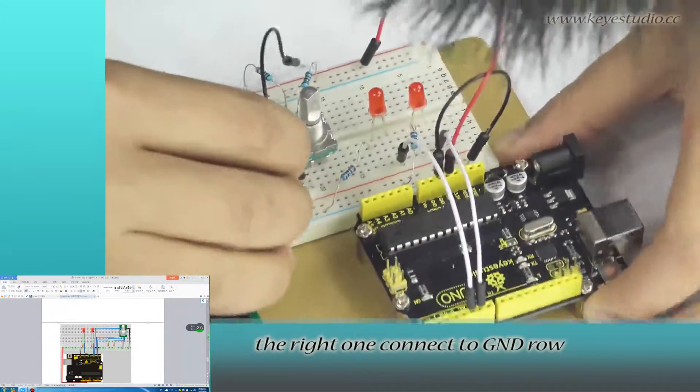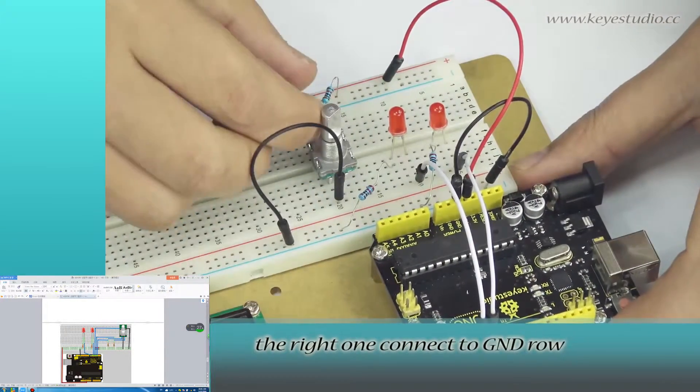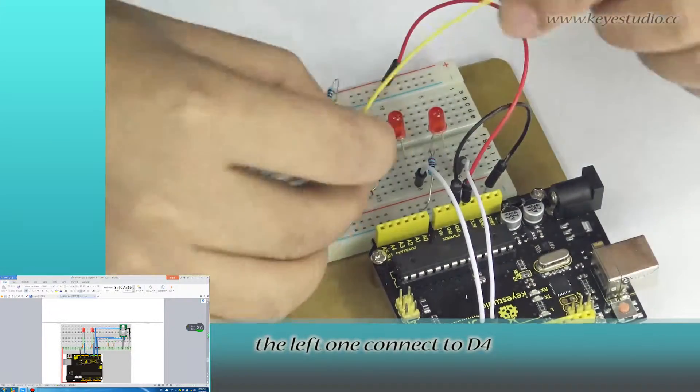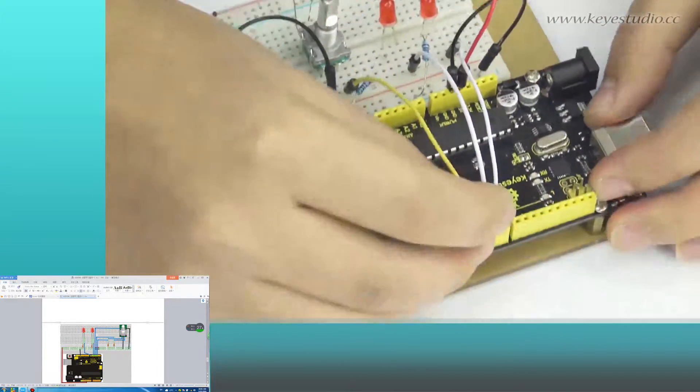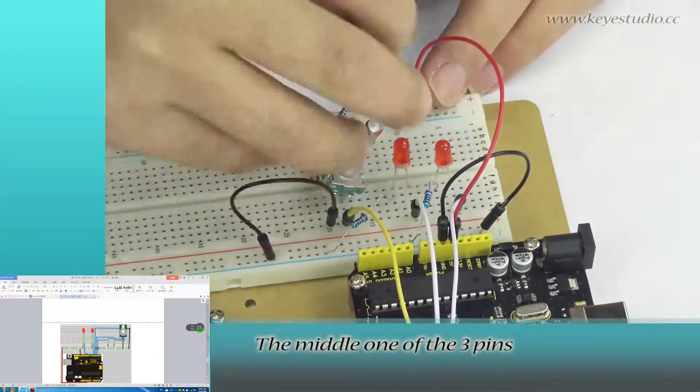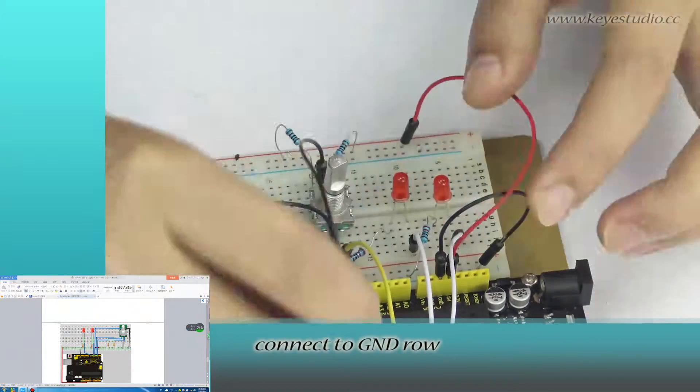For the other side, the right one connects to ground rail. The left one connects to D4. The middle one of the three pins connects to ground rail.